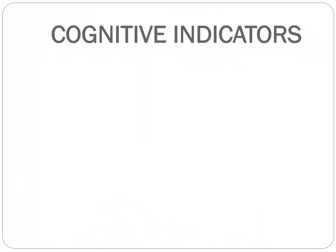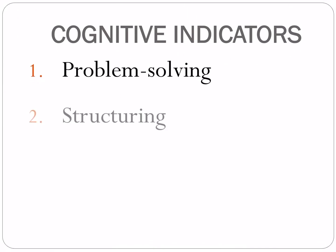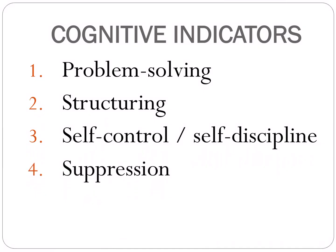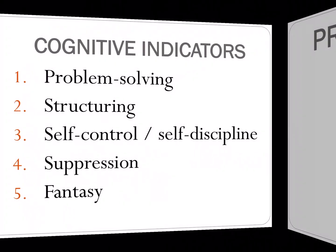Now let's proceed to cognitive indicators. We have problem solving, structuring, self-control, self-discipline, suppression, and fantasy. Once we observe that a patient is using these cognitive indicators, we can say that that particular person is experiencing stress.